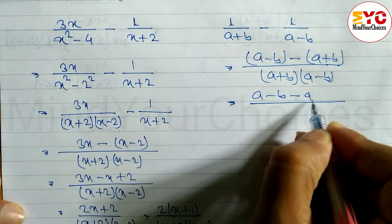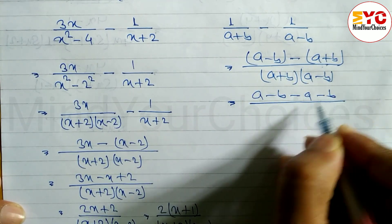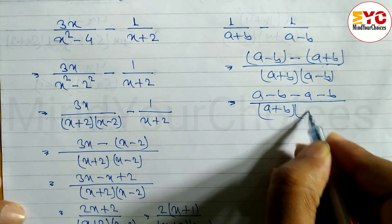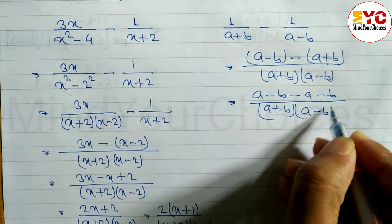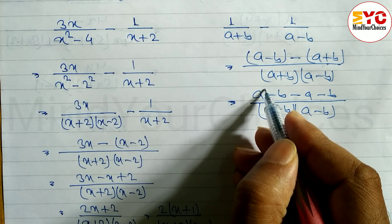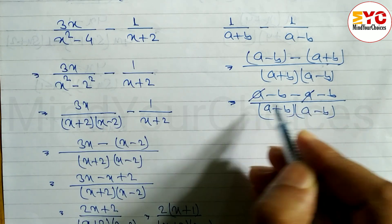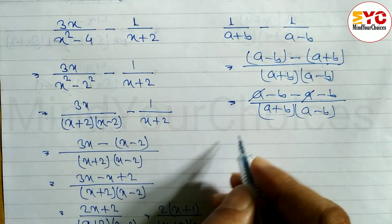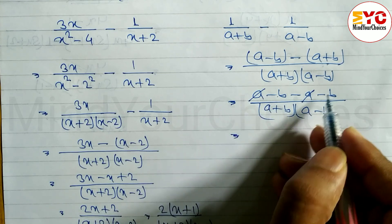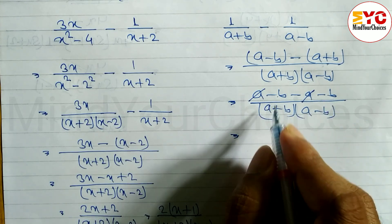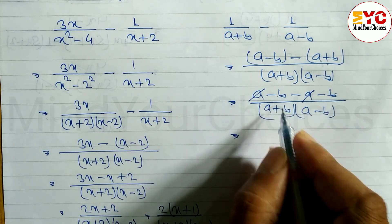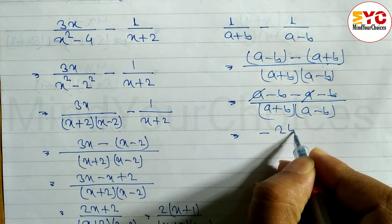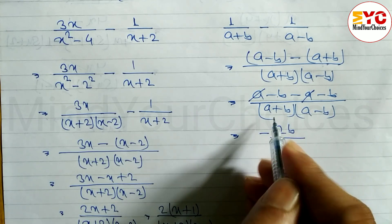After this, open the bracket: (a minus b) minus (a minus b) — that is, a minus b minus a plus b — all divided by (a plus b)(a minus b). You can see that a and a cancel, one positive and one negative. So we are left with minus b minus b, and since these are like terms, minus b minus b equals minus 2b.